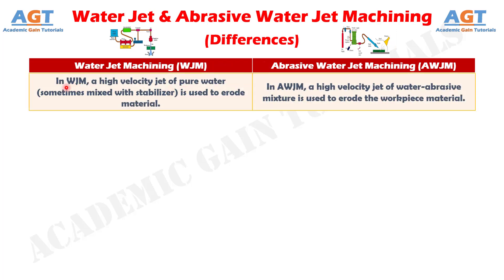Difference number 1: In water jet machining, a high velocity jet of pure water, sometimes mixed with a stabilizer, is used to erode material. Whereas, in abrasive water jet machining, a high velocity jet of water-abrasive mixture is used to erode the work piece material.